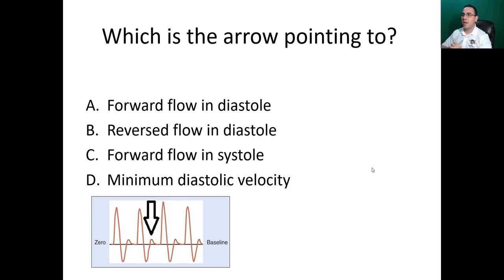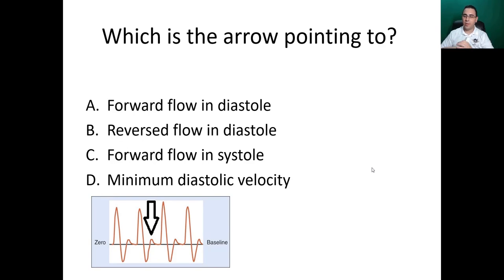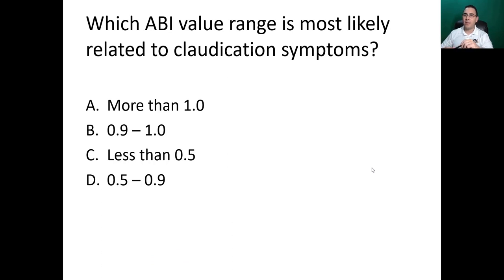Which point is the arrow pointing to? Options: forward flow in diastole, reverse flow in diastole, forward flow in systole, minimum diastolic velocity. The answer is A — forward flow in diastole. This is a triphasic waveform seen on the analog Doppler.